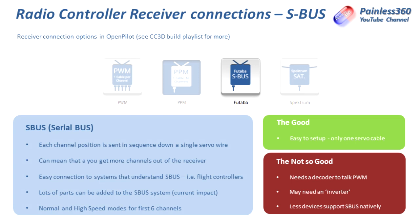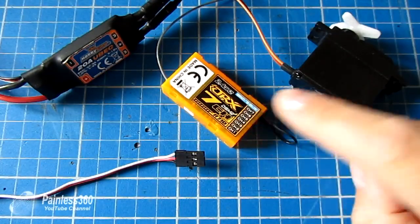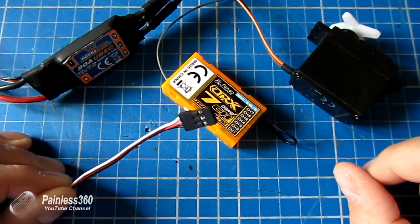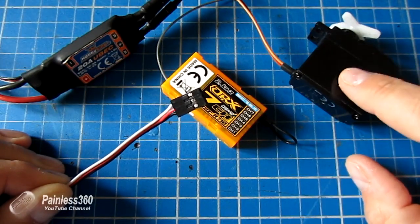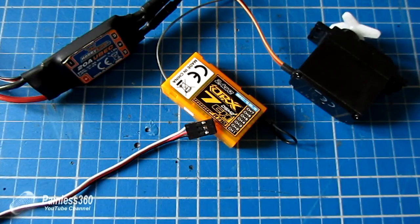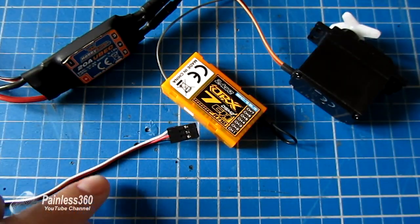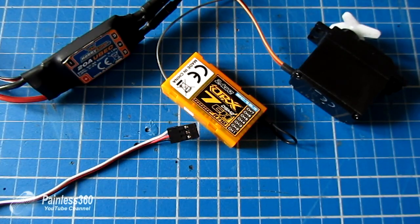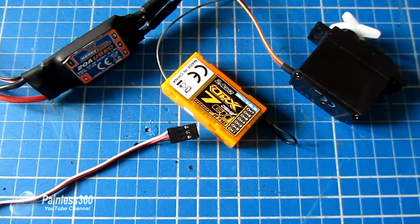Some flight controllers also need an inverter because the signal coming out of the SBUS channel can be inverted, and the inverter gets it the right way around for the flight controller to understand. There are fewer devices that understand SBUS natively — you can get servos that daisy chain together on the SBUS system, but they tend to be more expensive and more specialized. Also, because you're daisy chaining, the one SBUS wire must carry enough current to run all the connected servos, requiring heavier gauge wire than you'd use with PPM or PWM.